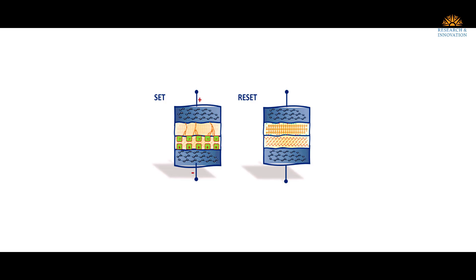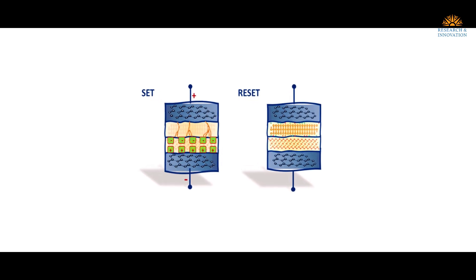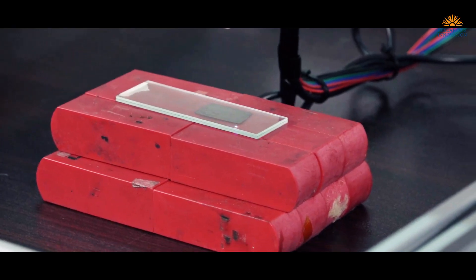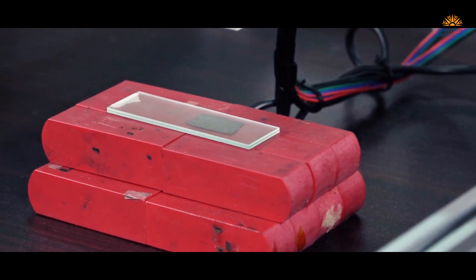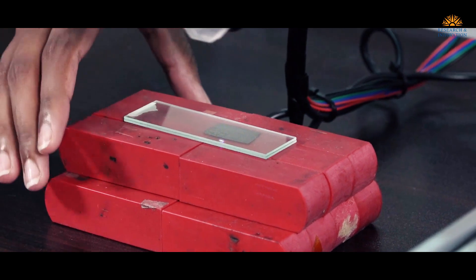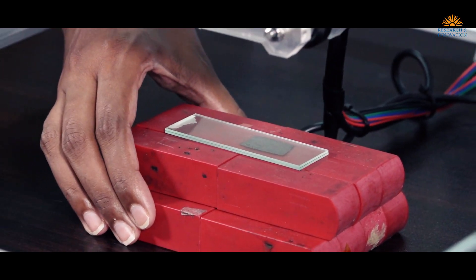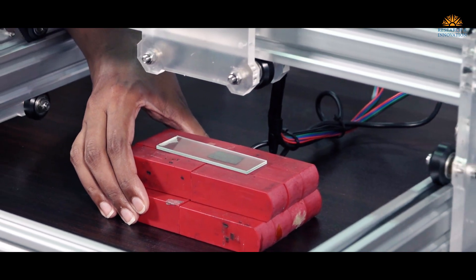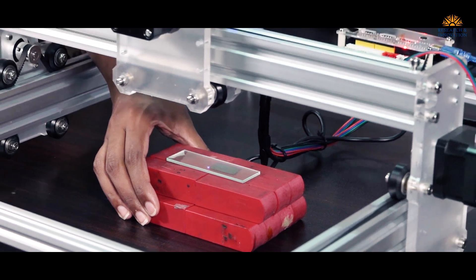Graphene oxide is an insulator that is placed as an insulating layer between the top and bottom electrodes. The electrodes are fabricated through laser scribing. When we reduce graphene oxide, it becomes conductive and that can be used as the conductive contacts for the devices.